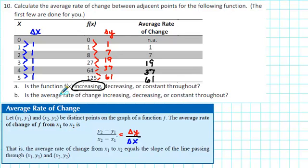Part B, is the average rate of change increasing, decreasing, or constant throughout? Well, we look at our average rate of change column, and we see that we have values 1, 7, 19, 37, 61. These values are getting larger. That indicates that the average rate of change is increasing.